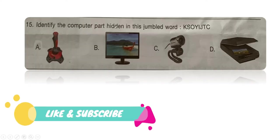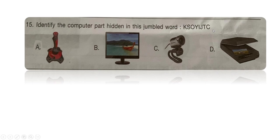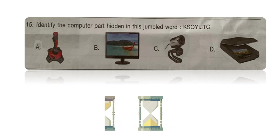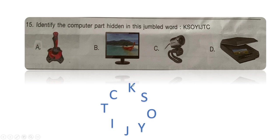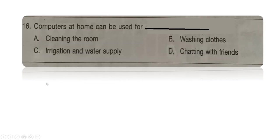Next question: identify the computer part hidden in the jumbled word shown. To unjumble, write the letters in a circular way so you don't have a bias, and the unscrambled answer is joystick, which is option A — the image of a joystick.